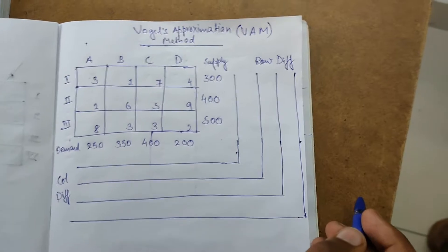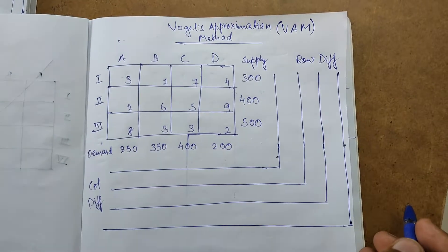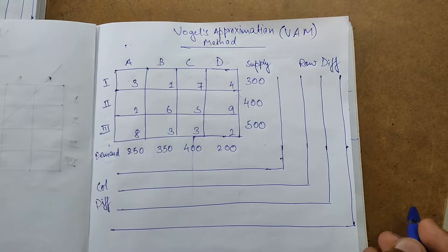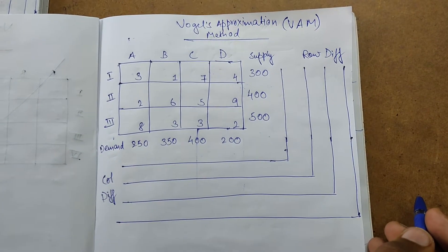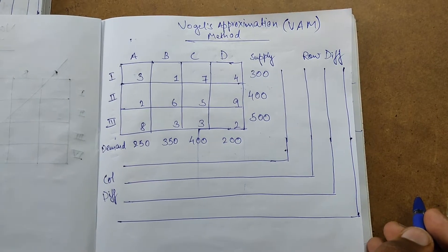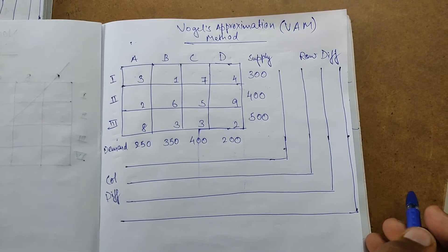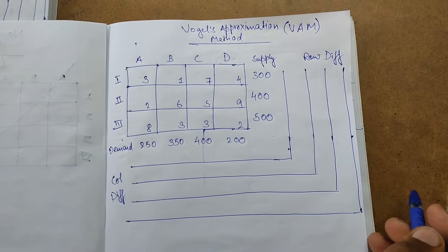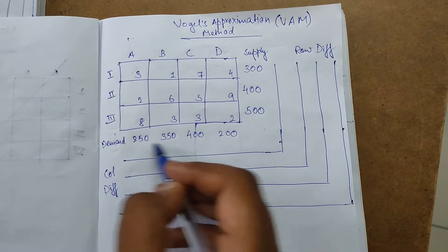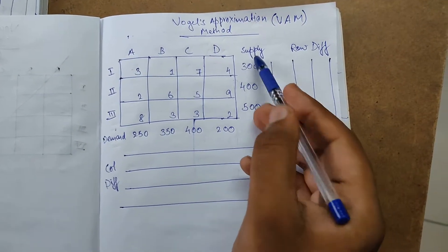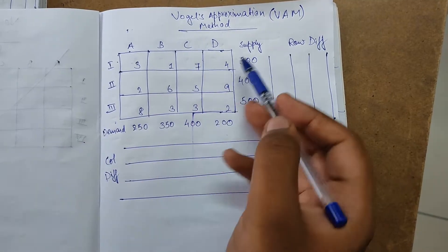Welcome back. This video is about Vogel's Approximation Method for solving a transportation problem. This may be in the syllabus of advanced students. In this problem, you are given a transportation model with sources, destinations, supply, and demand.